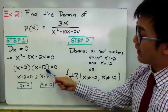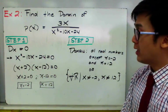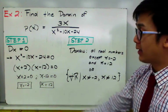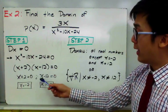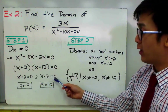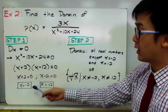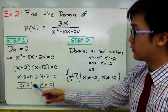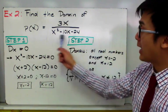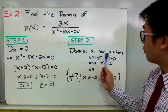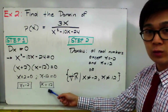Using the zero product property and splitting the two factors, we have x plus 2 is equal to 0 and x minus 12 is equal to 0. Solving for x gives us x is equal to negative 2 and x is equal to 12. Therefore, the domain of this rational function is all real numbers except for x is equal to negative 2 and x is equal to 12.